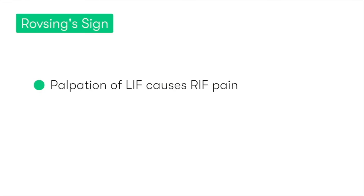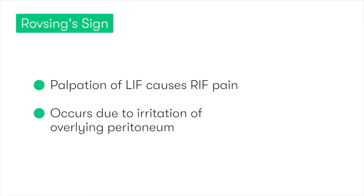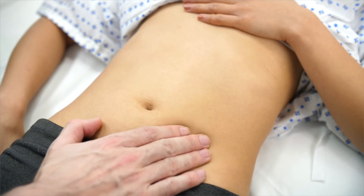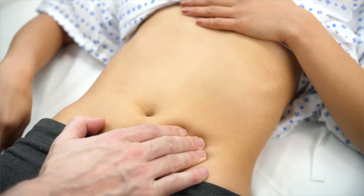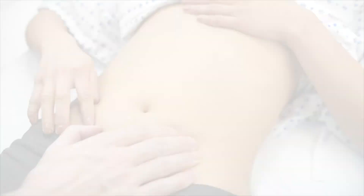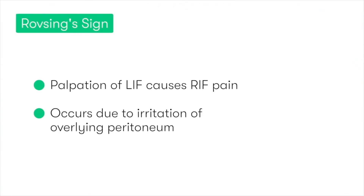Rovsing's sign describes when the patient is palpated in the left iliac fossa, and this results in pain in their right iliac fossa. It occurs as a result of the inflamed appendix irritating the overlying parietal peritoneum. So as we palpate the left iliac fossa, it causes the parietal peritoneum to stretch, and as the peritoneum overlying the appendix is already inflamed, this stretching results in the patient experiencing pain in the right iliac fossa.